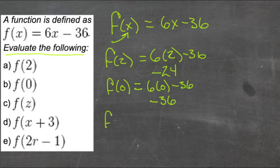f of z would mean that we'd replace x with z, so we'd just get 6 times z minus 36.